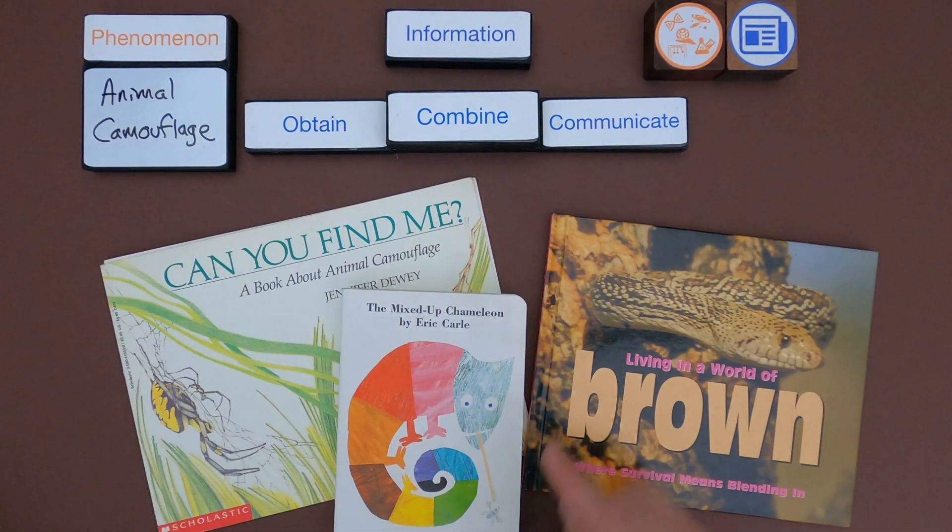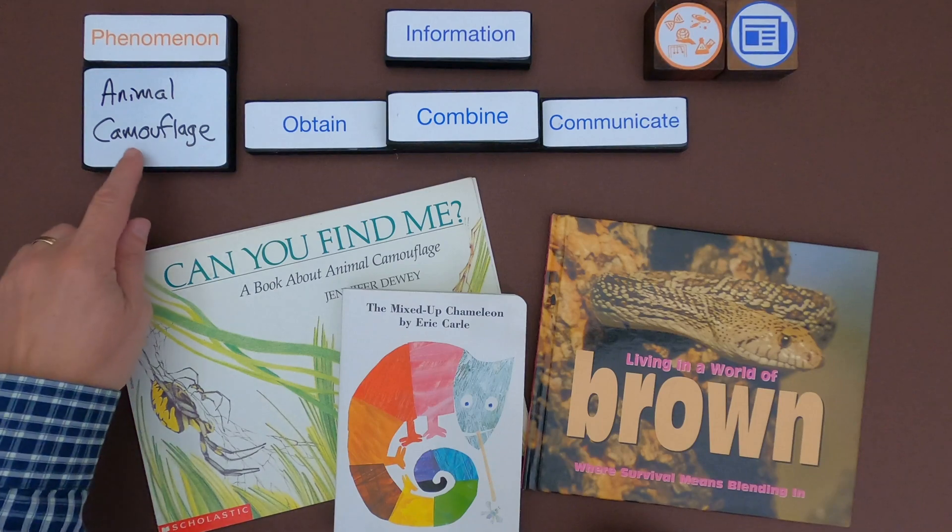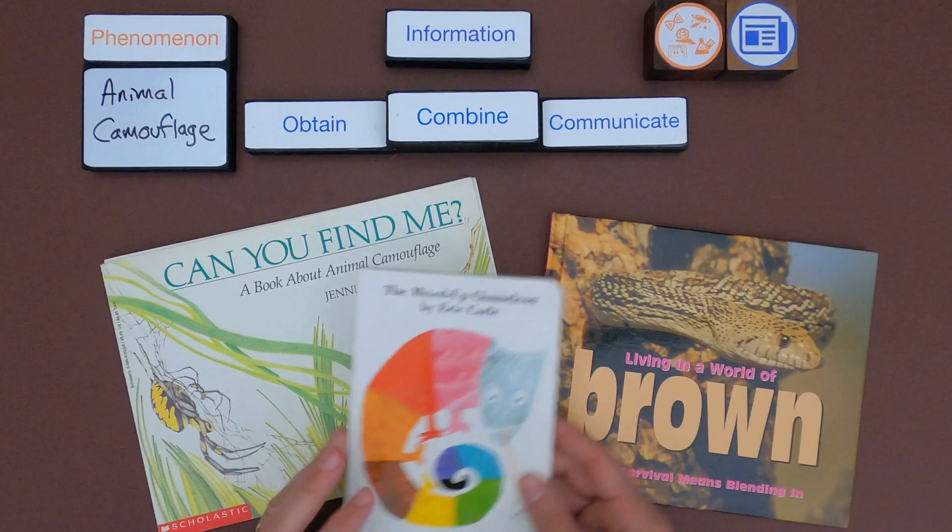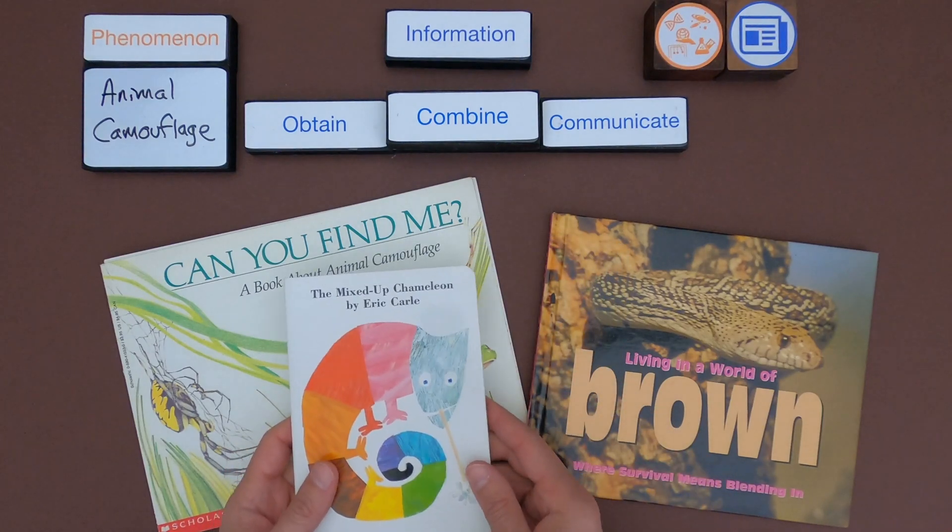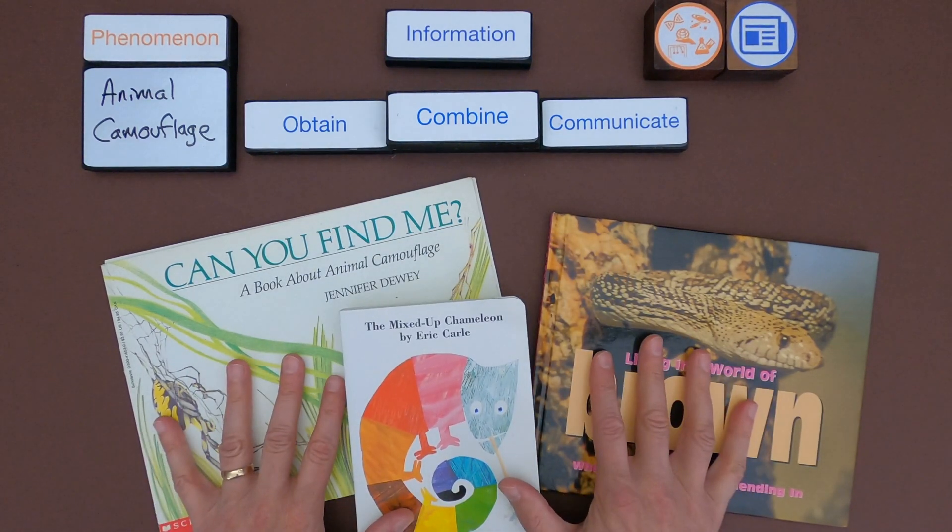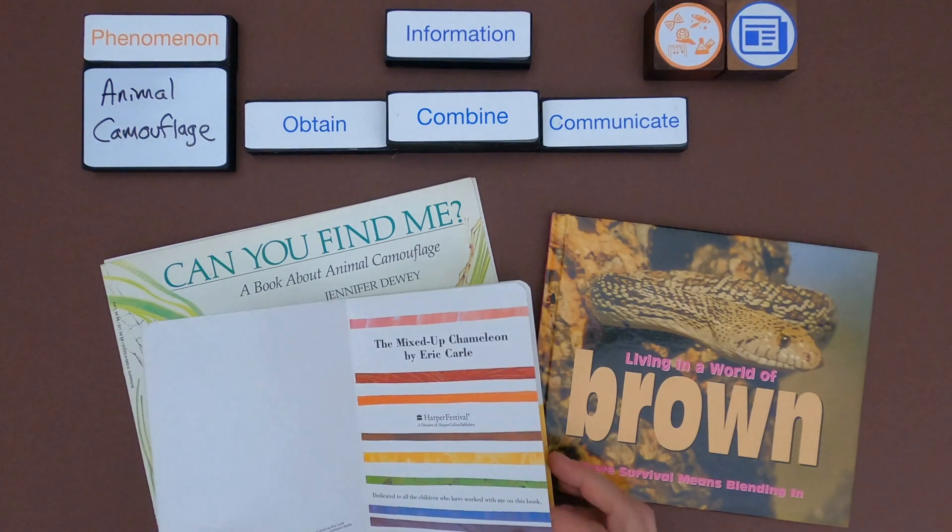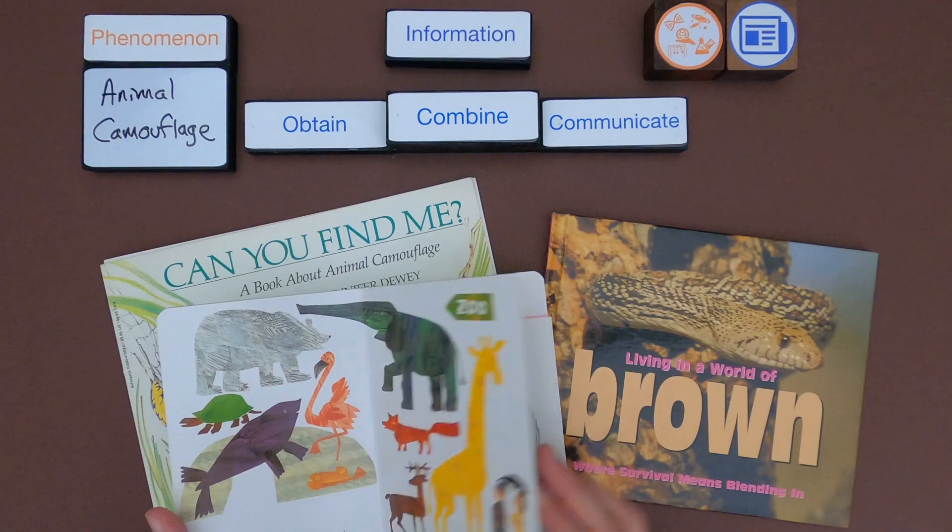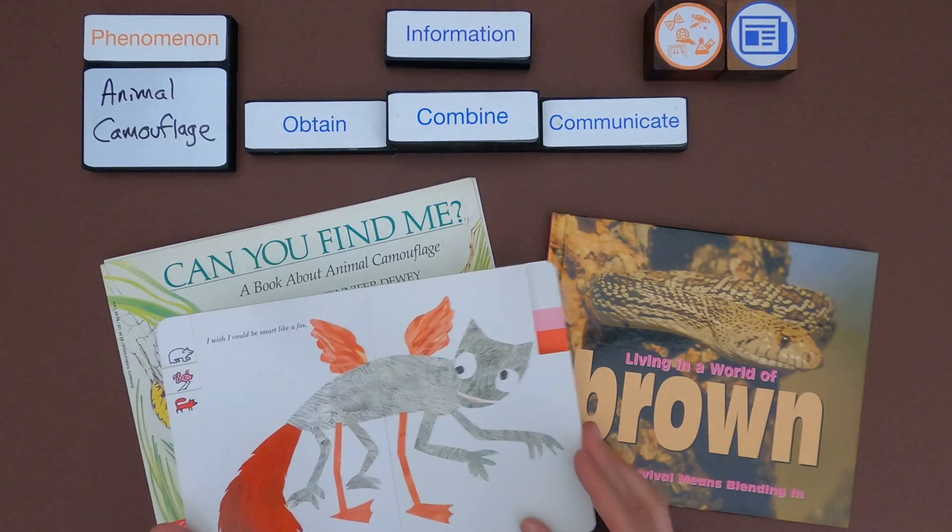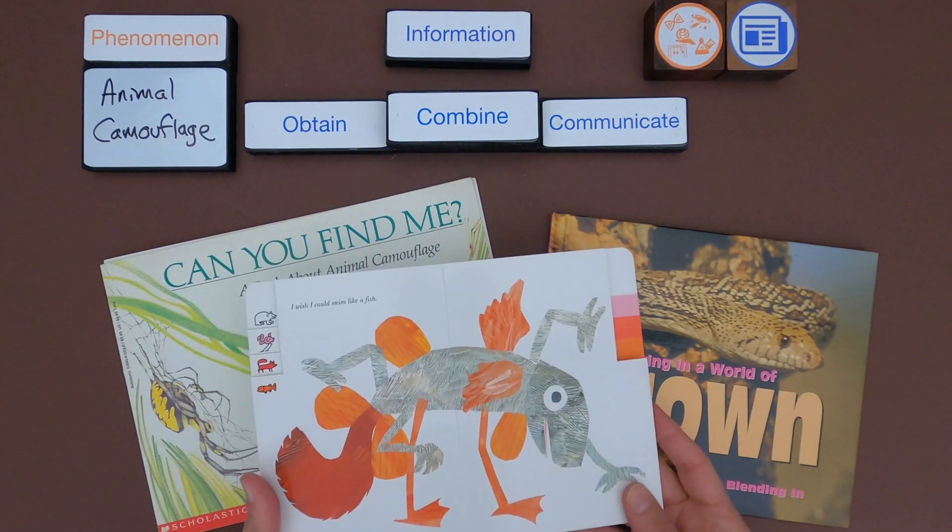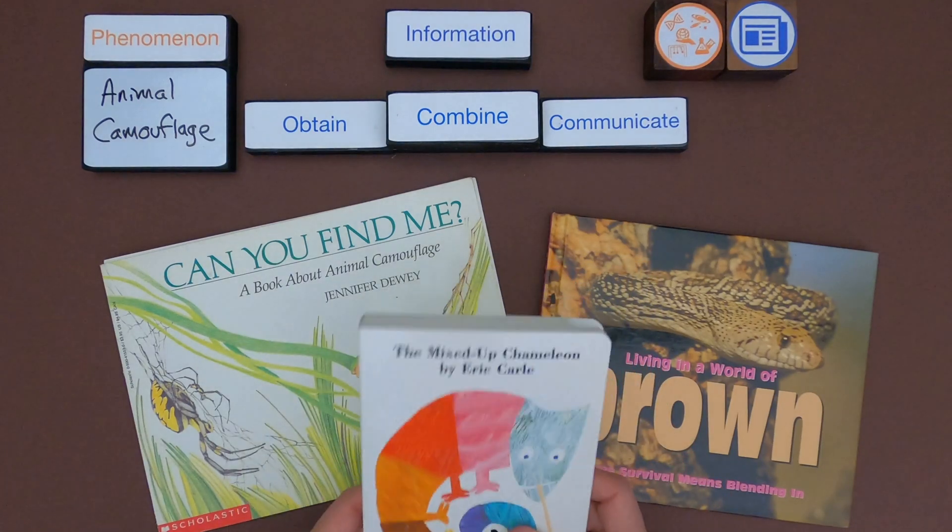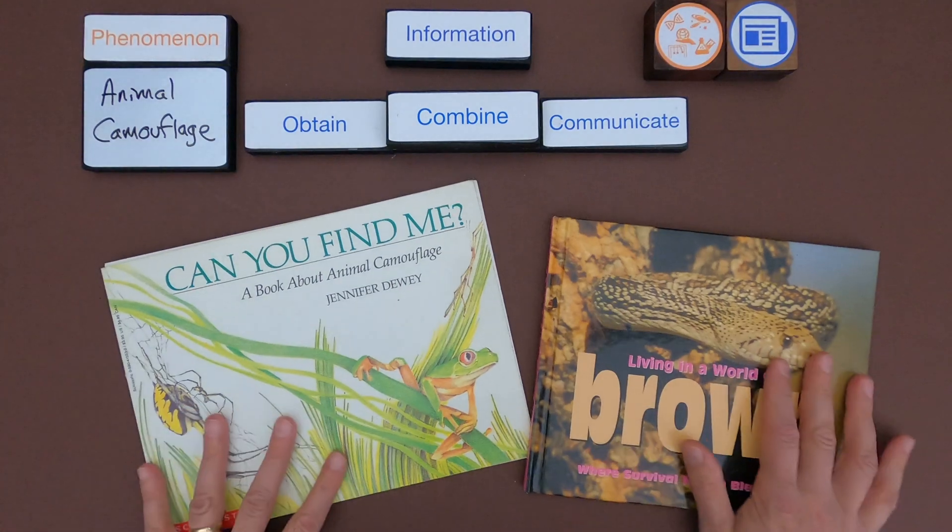Okay so what I'm going to be gathering information on is animal camouflage. And so I better define what camouflage is. But the first thing I want to do is just look through these three sources. So I have three sources and what I want to be looking for is to make sure that all of these are informative text. And so maybe you're familiar with this one. This is The Mixed Up Chameleon by Eric Carle. And so I can see as I look at this right away that this is not informative text. It's a wonderful story but it's not informative text. And so I'm not going to include that as I look at information.